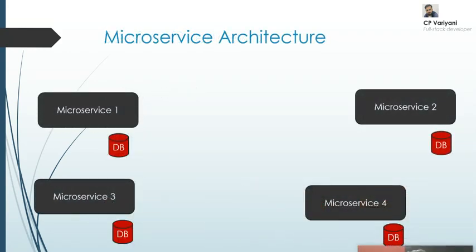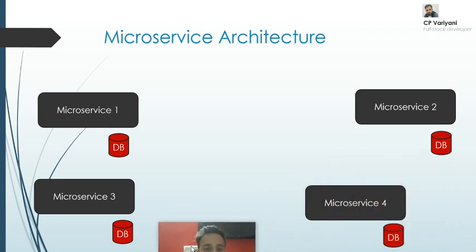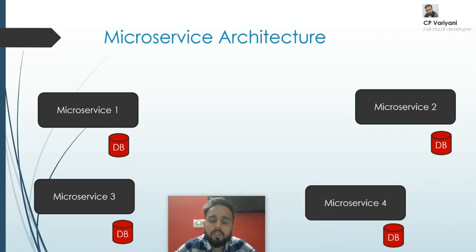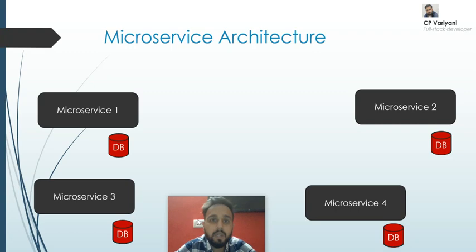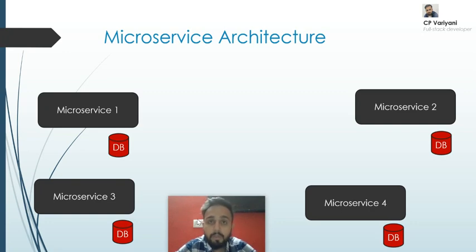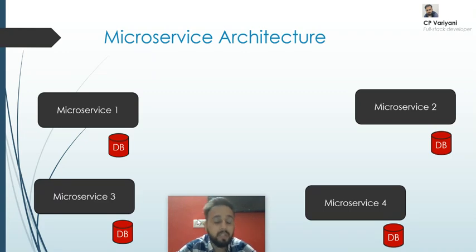Let me explain microservices architecture. You've probably already worked on monolithic applications. In simple terms, a monolithic application is one where you keep all the code in one solution — the business layer, data layer, and UI all reside in the same solution. Any third-party services, common libraries, APIs, or validation logic are also kept in that single solution.